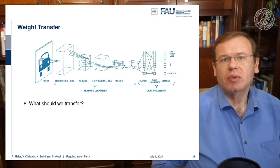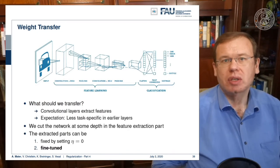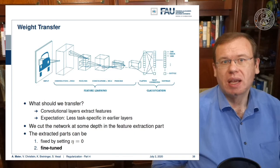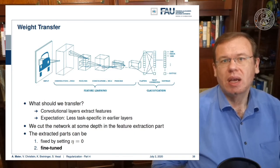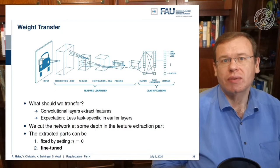So now the question is, what should we transfer? Well, the convolutional layers extract features, and the expectation now is that less task-specific features are in earlier layers. We have seen that in a couple of papers. We can also see that in our videos on visualization. So typically those have more basic information and are likely to contain information that is worth transferring.